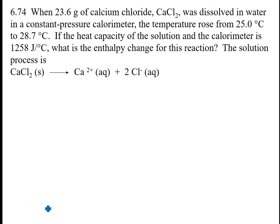As always, we're going to start by writing down our information. We have a mass of 23.6 grams of calcium chloride. We have a temperature of 25 degrees C and a temperature of 28.7 degrees C. It tells you the heat capacity—notice there's no mass or moles in this unit, so this is C: 1,258 joules per degree C. And it wants to know what the enthalpy change is, which is delta H.